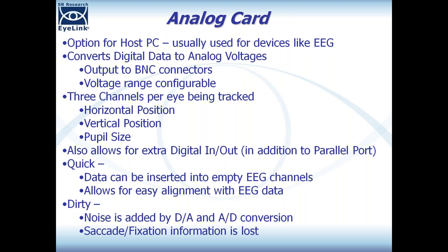I think of this analog card option as quick and dirty. It's quick because your data is already aligned — all the EEG data and all the eye data are in one spot, since the eye data is represented as different channels in the EEG data file. So it's quicker and you aren't dealing with two different data sets and worrying about alignment in data analysis.